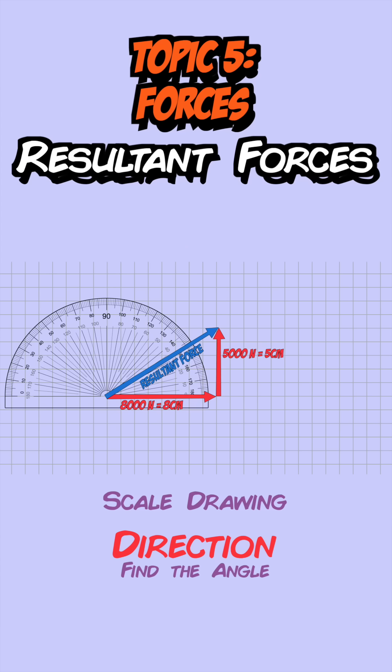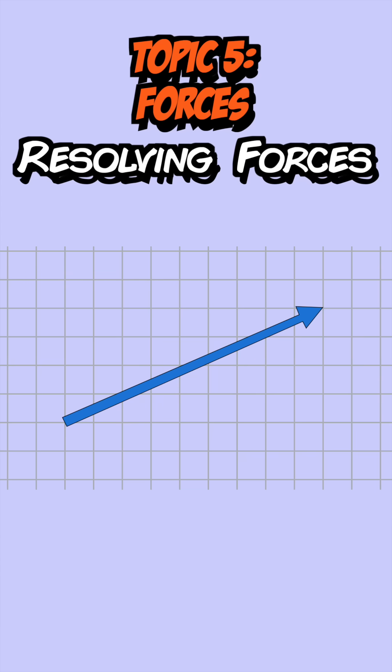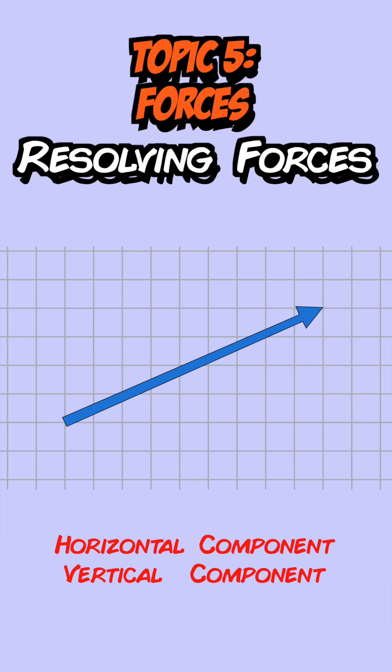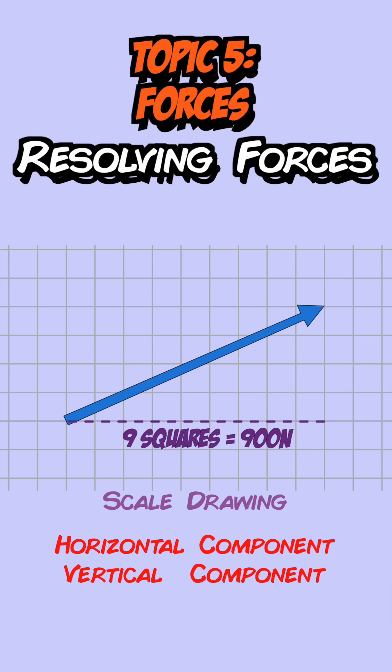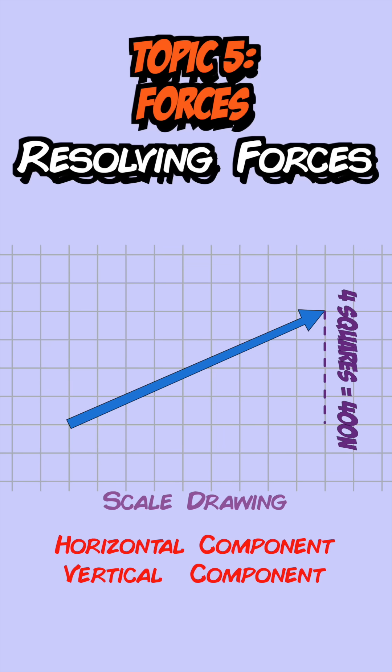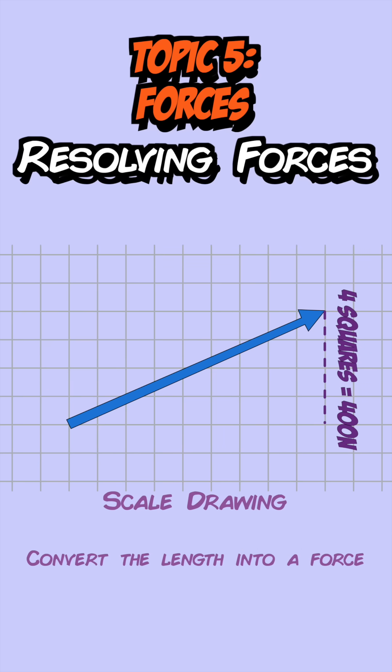Sometimes you can be given a diagonal force and asked to work out the horizontal and vertical components. For this you use a scale drawing again — measure the horizontal distance to find the horizontal component and the vertical distance to find the vertical component, then use the scale to convert the lengths into forces.